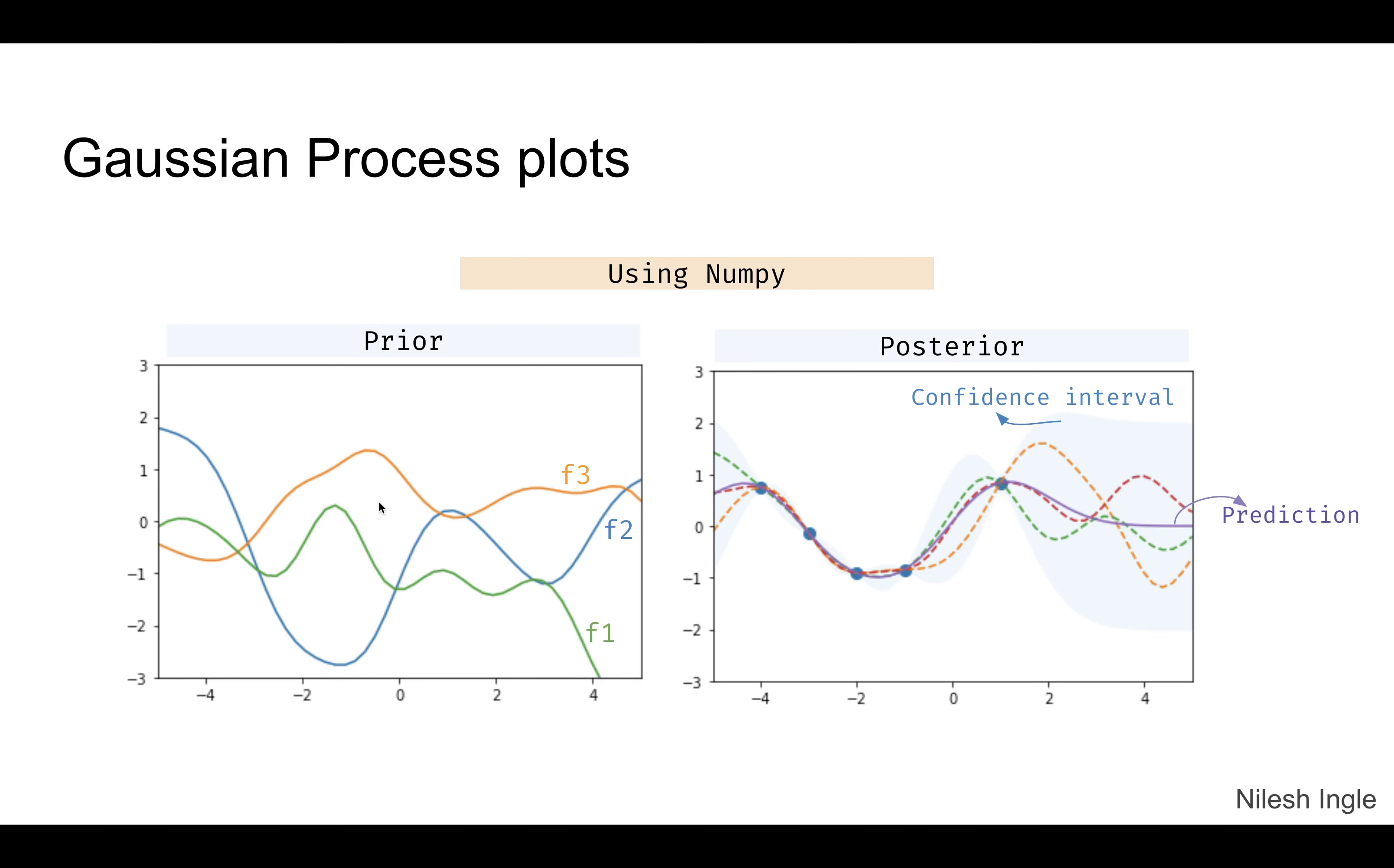These are prior functions and there are no observed data points in it. On the other hand, on the right hand side, once we introduce the observed data points such as shown here—the five data points—you can see that those data points bring these functions together.